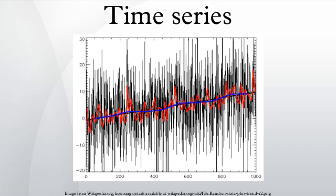Notation: A number of different notations are in use for time series analysis. A common notation specifying a time series x that is indexed by the natural numbers is written x equals x1, x2, etc. Another common notation is y equals yt, t in T, where T is the index set.